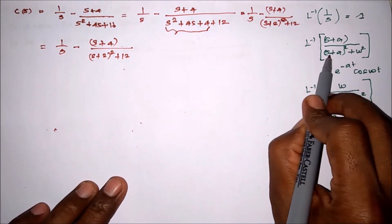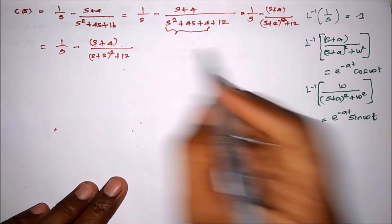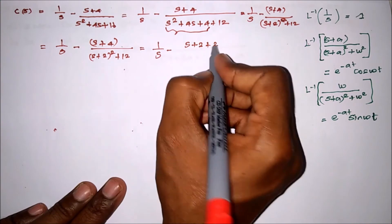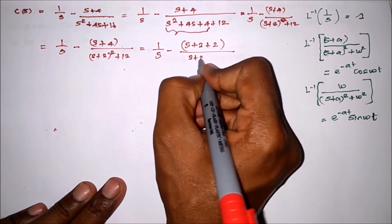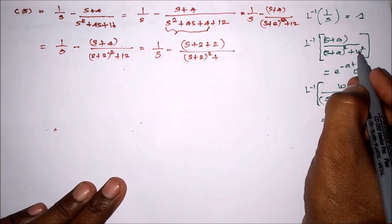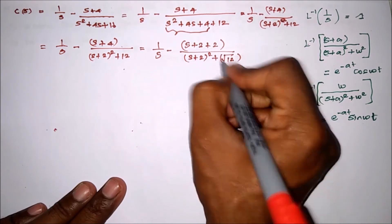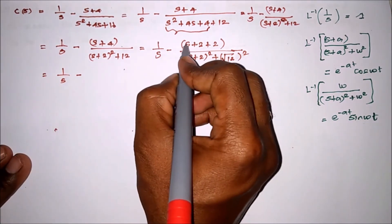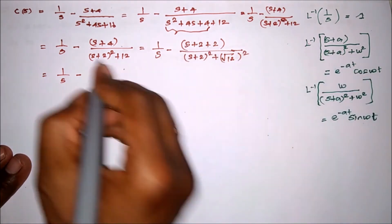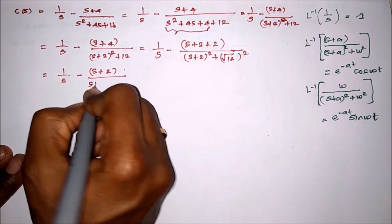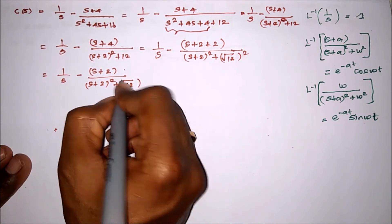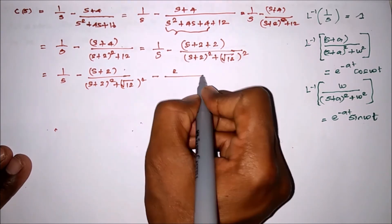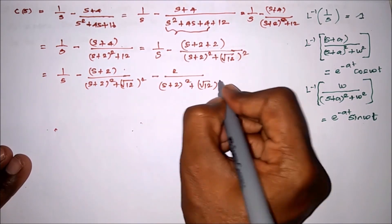We need to convert this into the standard forms for inverse Laplace. For the cosine form, we need (S plus 2) divided by (S plus 2) squared plus (√12) squared. For the sine form, we need √12 divided by (S plus 2) squared plus (√12) squared. So we split and adjust: C(S) equals 1/S minus (S plus 2) divided by (S plus 2) squared plus (√12) squared, minus 2 divided by √12, multiplied by √12 divided by (S plus 2) squared plus (√12) squared.